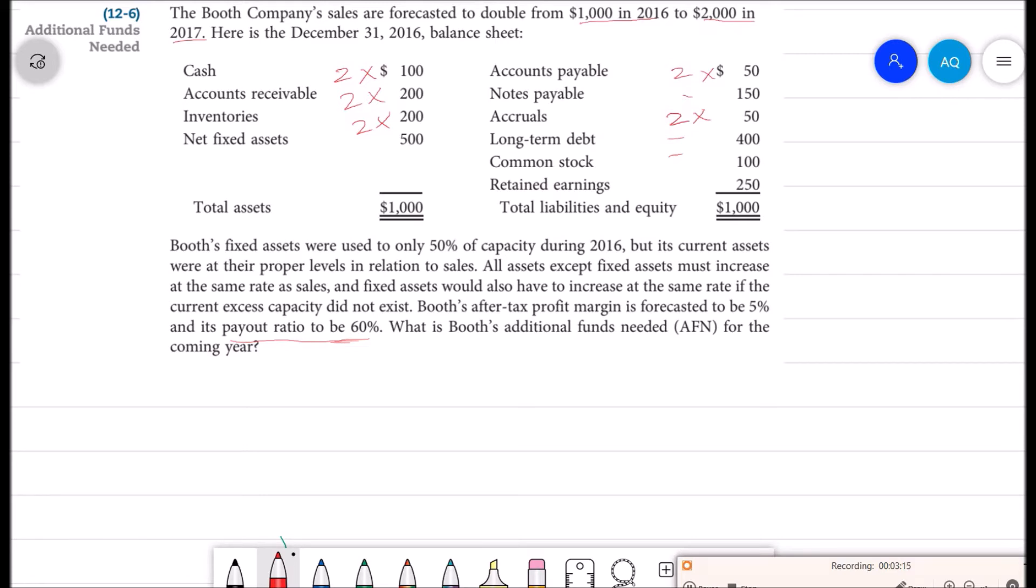Let's calculate the additional funds requirement. Let's complete this balance sheet first. So here is 2017 balance sheet. Cash gets doubled. Accounts receivable become $400. Inventories will become $400. We don't need to increase our fixed assets. Total assets will be $1,500.